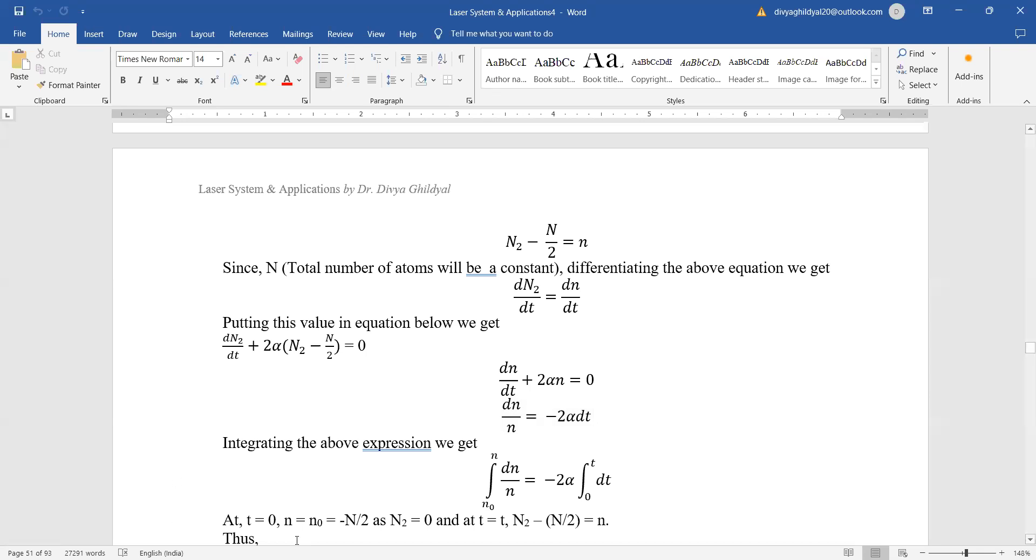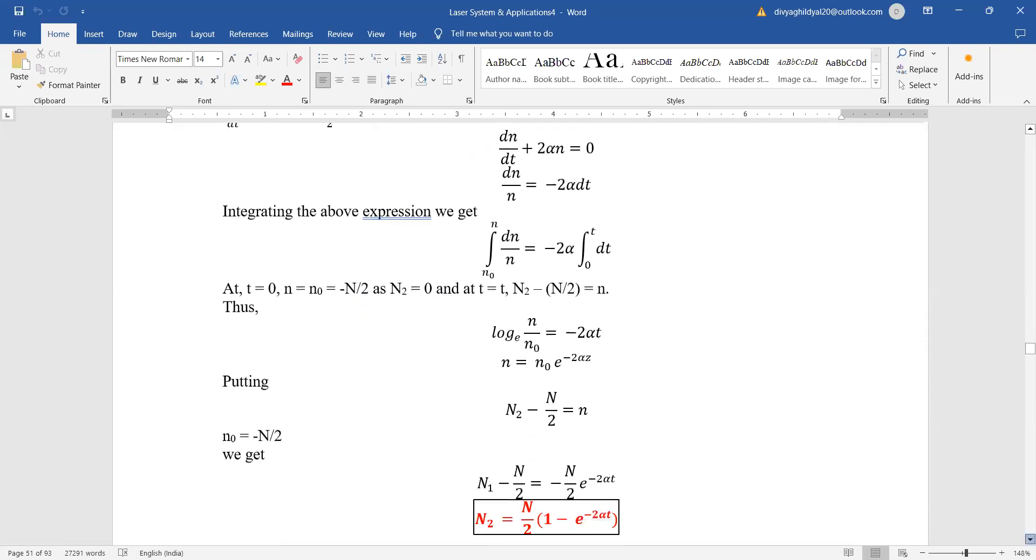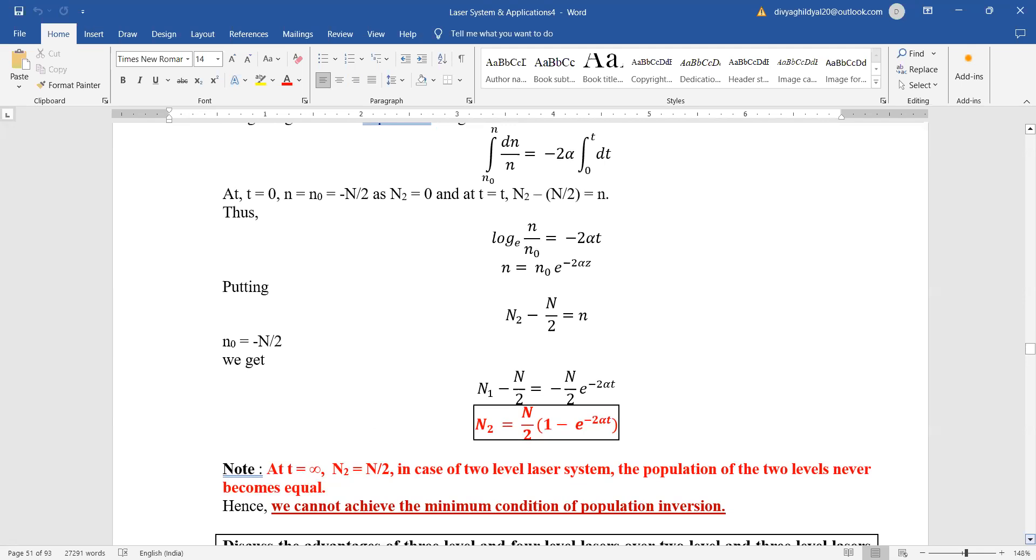At t equals zero, delta N equals N_not equals minus N/2. Then we put and get the value. So we cannot achieve minimum condition of population inversion in two-level setup.